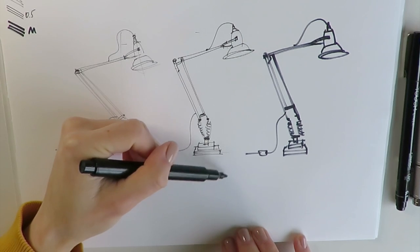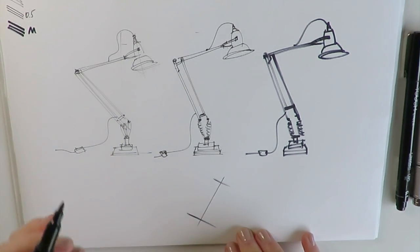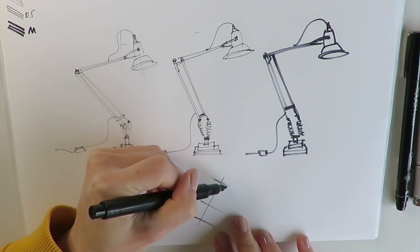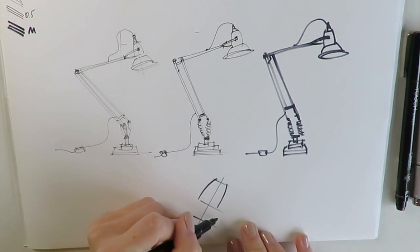Now we switch on to quick studies of various details, different elements of our lamp and we'll be drawing them by using again different thicknesses of our liners.